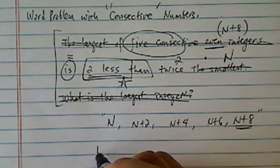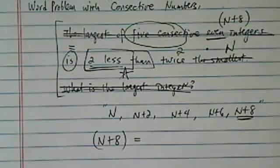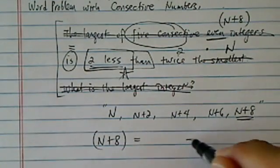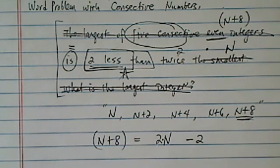So basically the equation comes to the largest one is 2 less, something minus 2, 2 less of the twice of the smallest.